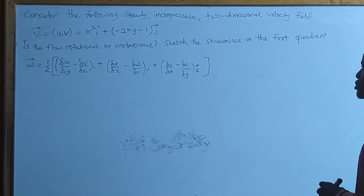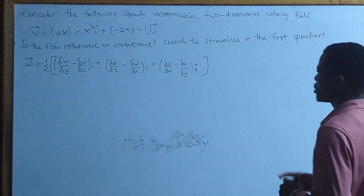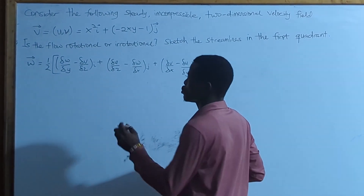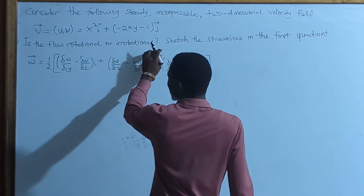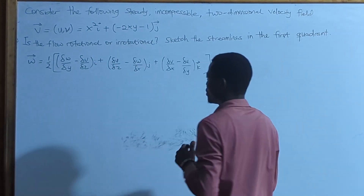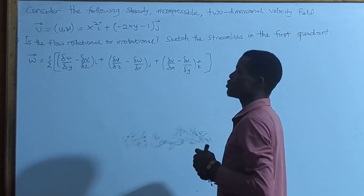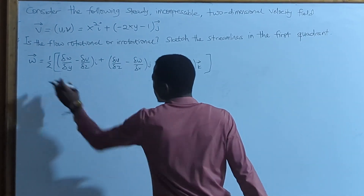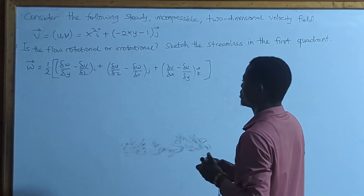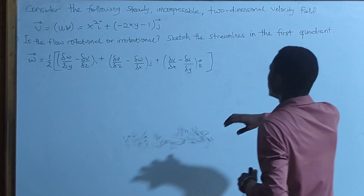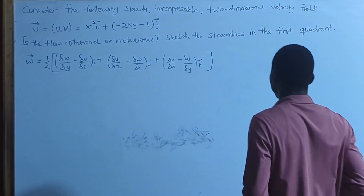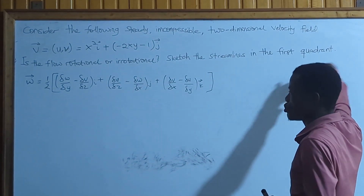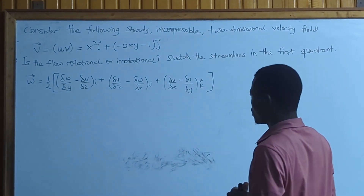This question is in two parts. We are first supposed to find whether it is rotational or irrotational, and to do that we are going to use this differential equation — the long formula we have here. We also need to sketch the streamline in the first quadrant, which means x and y are supposed to be positive.